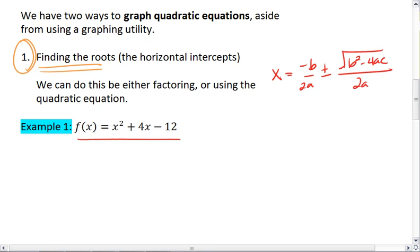When you factor f(x) equals x squared plus 4x minus 12, you should end up with f(x) equals—remember we're going to split this into two binomials with an x term as the first term in each binomial.